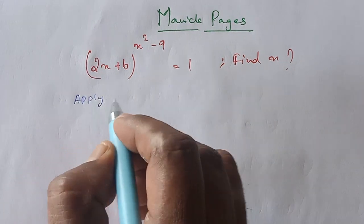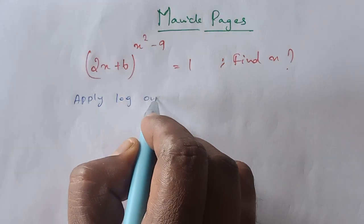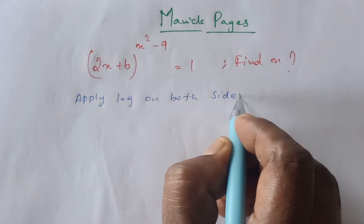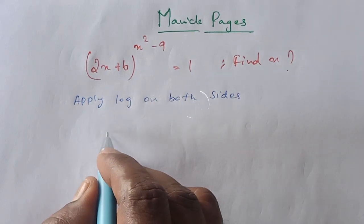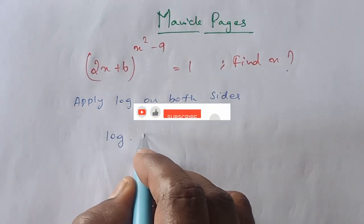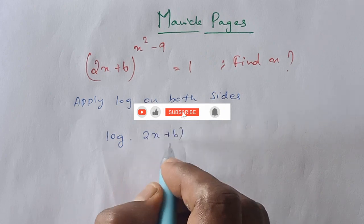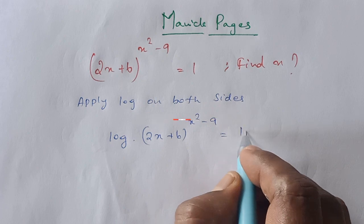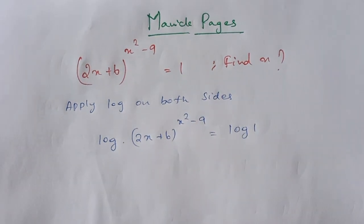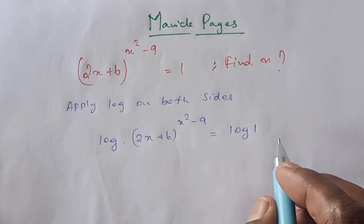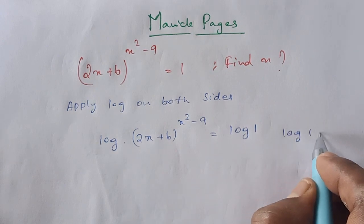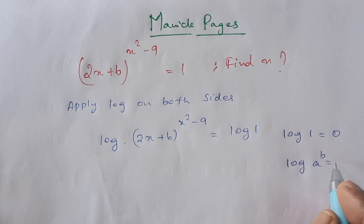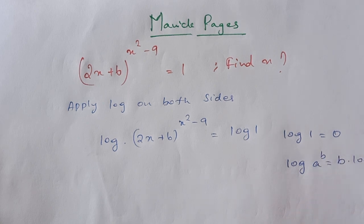First we apply log on both sides. So, log of (2x plus 6) raised to the power (x squared minus 9) is equal to log 1. We have the property: log 1 value is 0, and log a to the power b is equal to b into log a.